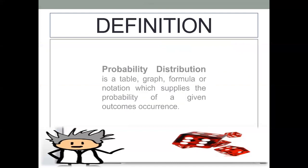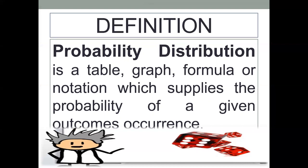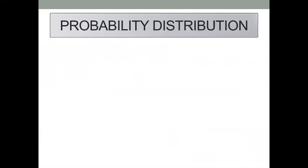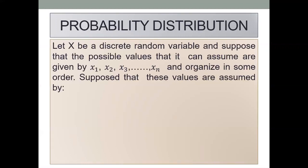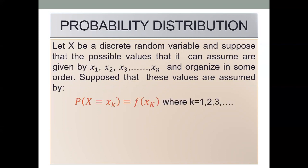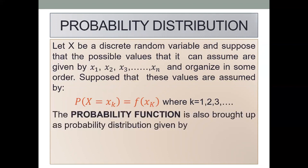Probability Distribution is a table, graph, formula, or notation which supplies the probability of a given outcome's occurrence. It shows the likelihood of an outcome to occur. Probability Distribution may be represented in this manner: let x be a discrete random variable, and suppose that the possible values it can assume are x sub 1, x sub 2, x sub 3, until x sub n, organized in some order. Suppose these values are assumed by this notation: probability of x equal to x sub k is equivalent to the function of x sub k, where k equals 1, 2, 3, and so on. The probability function is also referred to as probability distribution.